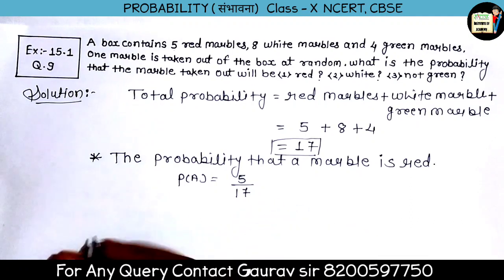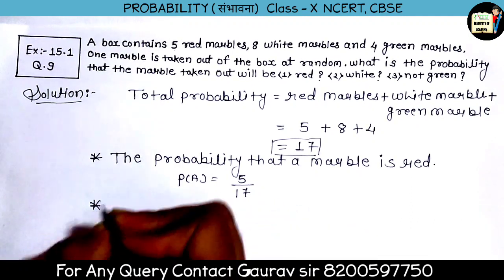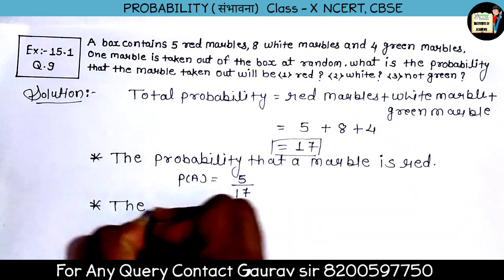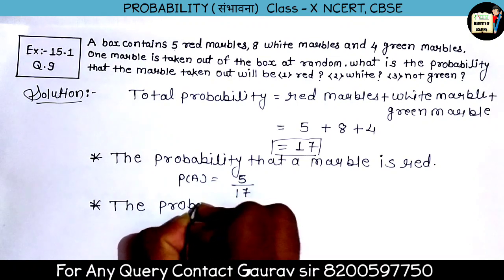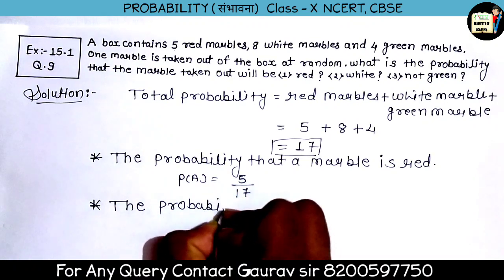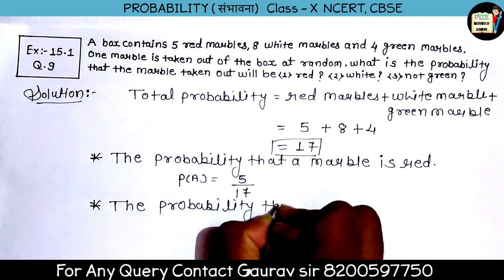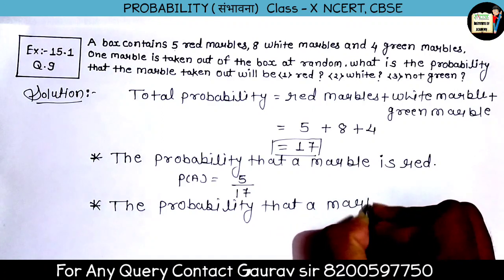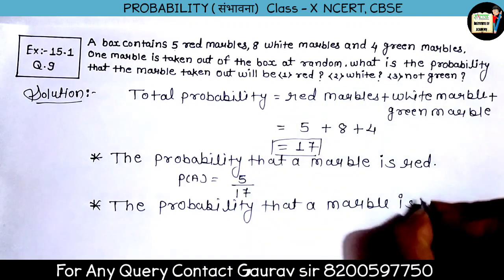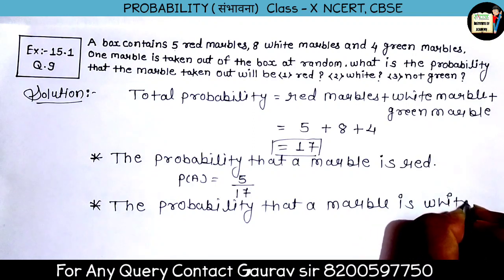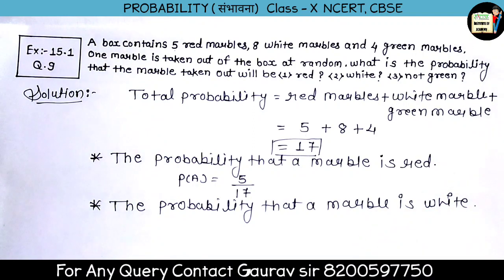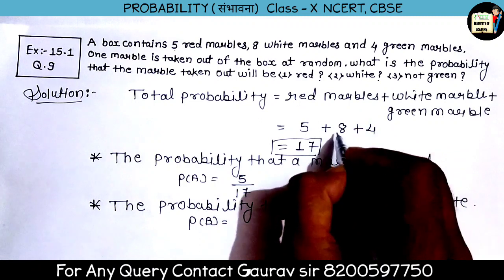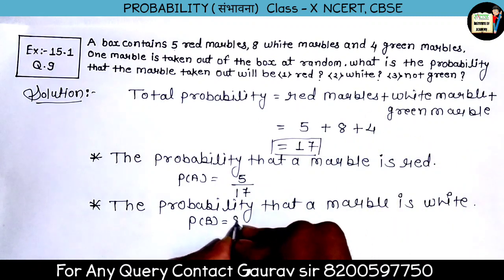Second, the marble should be white. So we write: the probability that a marble is white. P(B) — white marbles are 8, so the answer is 8 upon 17.